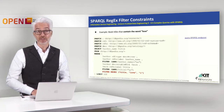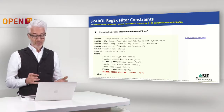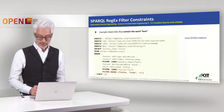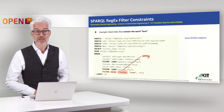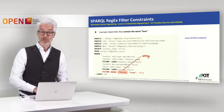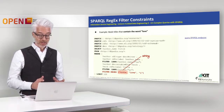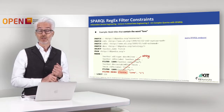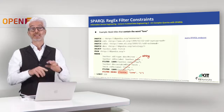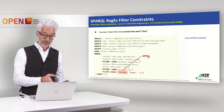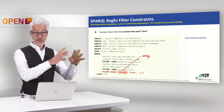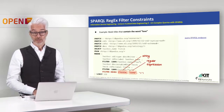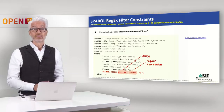Now let's have a closer look at regular expressions. We want to expand our original query to only retrieve books which contain the word 'love' in their title. We use a filter expression followed by the term REGEX, meaning we are using a regular expression. In parentheses you write the regular expression, starting with the string on which it should be applied — in this case the title variable — followed by the regular expression itself, which must be written in double quotes.